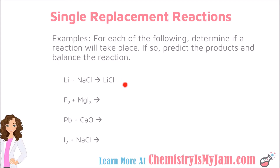Anytime you write a formula for a compound, you should check your charges. Lithium has a charge of plus one, and chlorine has a charge of negative one, so there are no additional subscripts needed for this compound. Sodium is left over — it was bumped out of the compound by the lithium. You should ask yourself anytime you write that element by itself: is that element a diatomic? In this case, no — sodium is not a diatomic, so it's fine without any additional subscripts. The final thing you want to check is that the reaction is balanced, and in this case it is. This is a single replacement reaction where a single element within a compound was replaced.